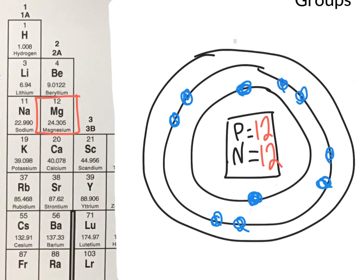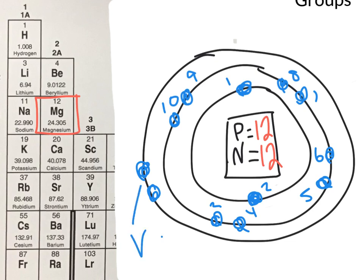Counting so far, we have 1, 2, 3, 4, 5, 6, 7, 8, 9, 10 — which means we still need to add an additional 2 electrons in the third ring. These are going to be our 2 valence electrons.